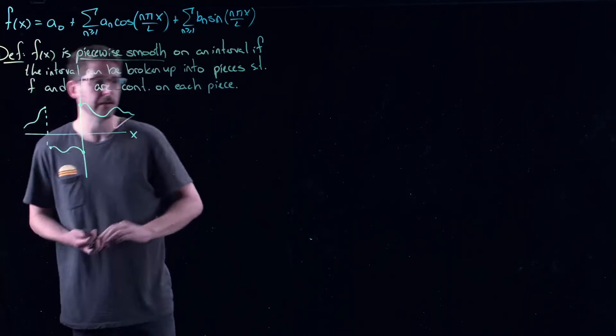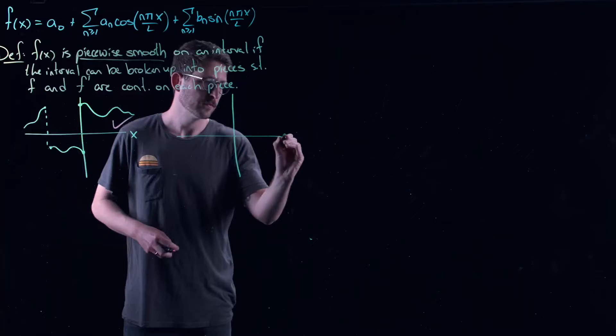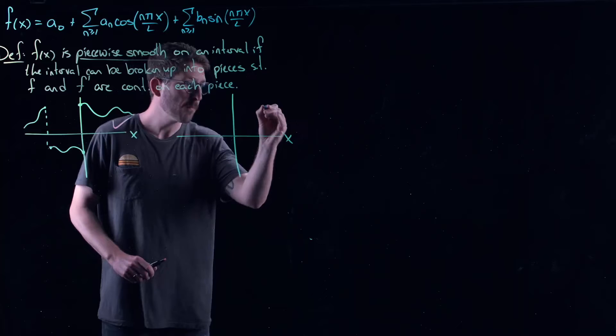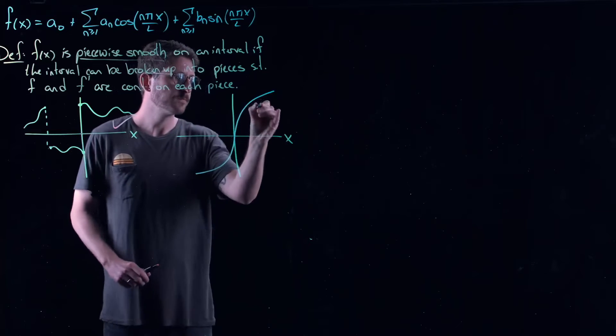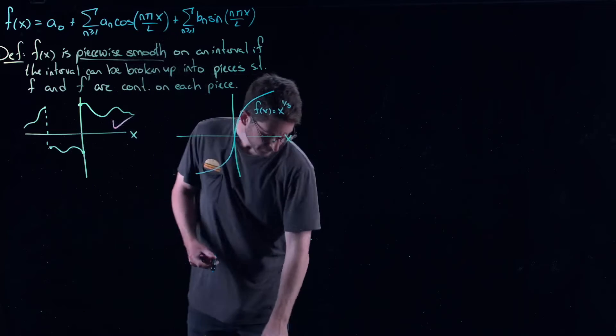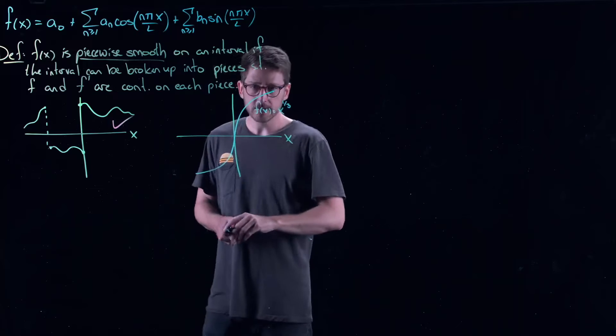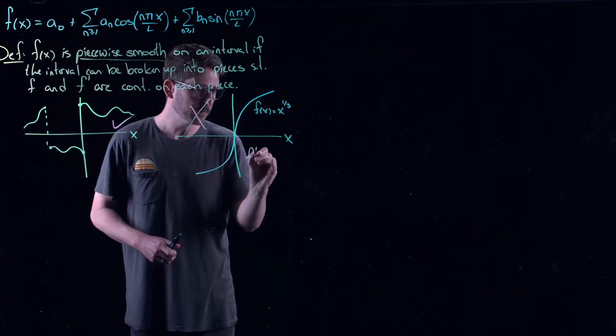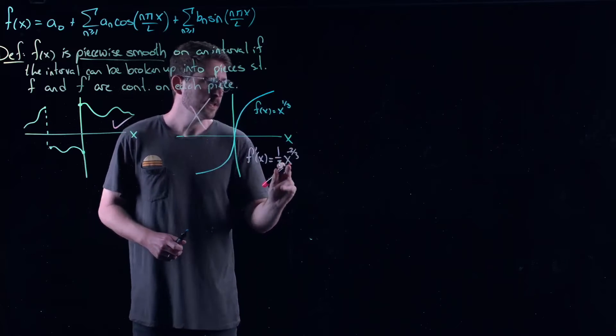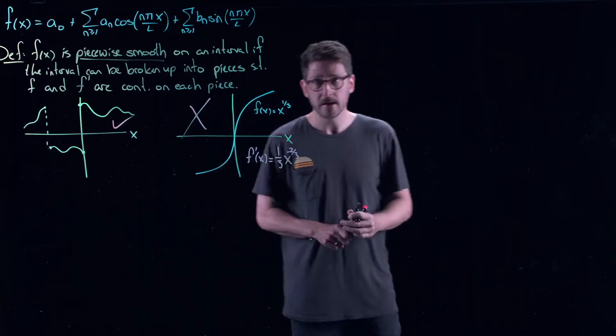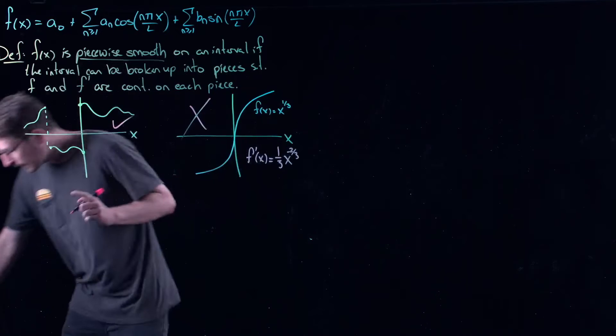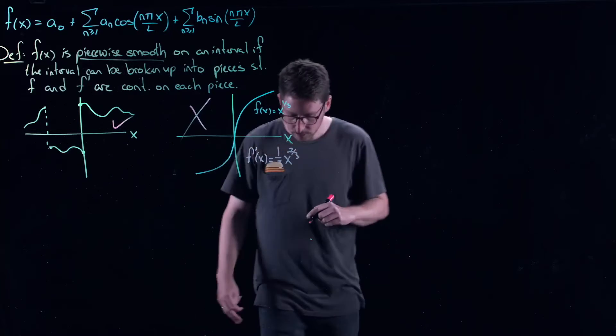Let me show you one that's not. You probably know this function. f(x) is equal to the cubed root of x. So even though it looks nice and continuous, its derivative f'(x) is equal to one-third x to the minus two-thirds. Its derivative is not continuous at x equal to zero. So in this case, this thing is not a piecewise smooth function.